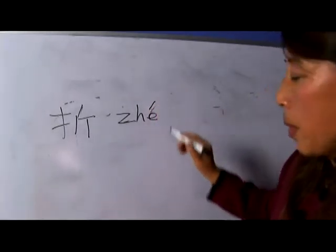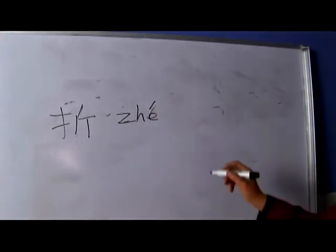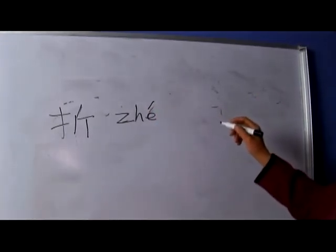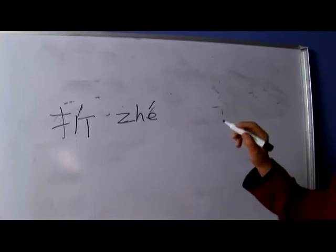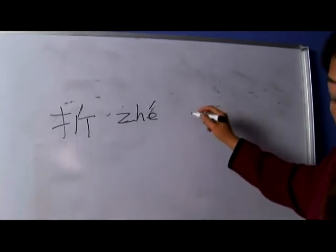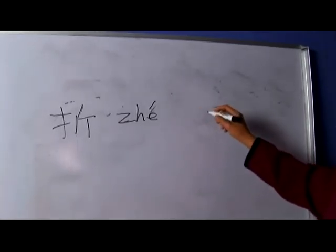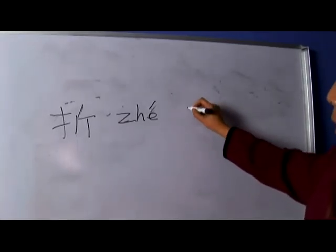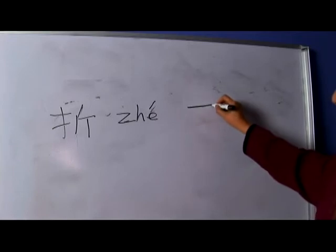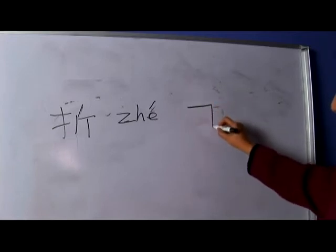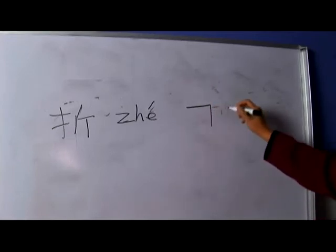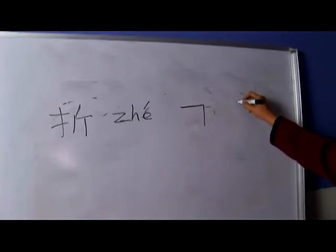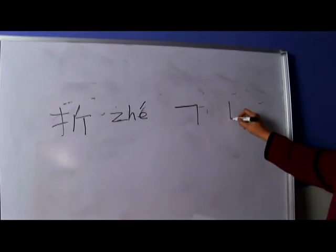Zhe is basically a 90-degree turn, either going down — heng, zhe — or going right.